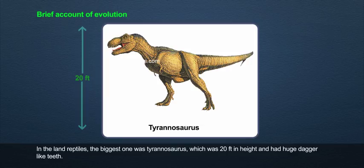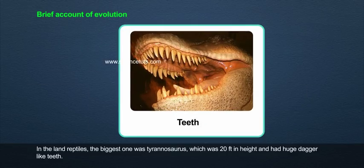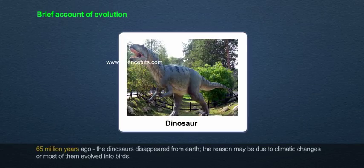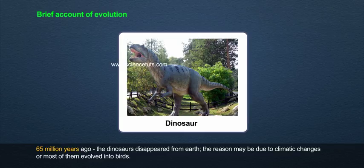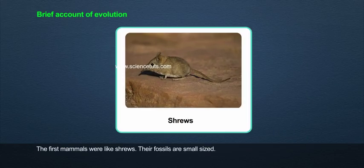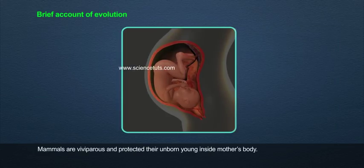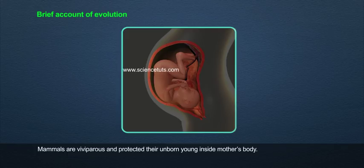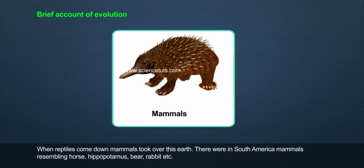Among land reptiles, the biggest was Tyrannosaurus, which was 20 feet in height and had huge dagger-like teeth. 60 million years ago, the dinosaurs disappeared from Earth — the reason may be due to climatic changes — but most of them evolved into birds. The first mammals were like shrews; their fossils are small-sized. Mammals are viviparous and protected their unborn young inside the mother's body.